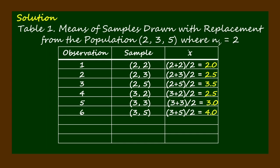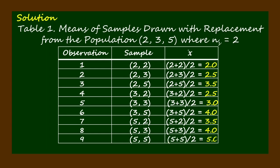For the sixth observation, the samples are 3 and 5, and the sample mean is 4.0. For the seventh observation, the samples are 5 and 2, and the sample mean is 3.5. For the eighth observation, the samples are 5 and 3, and the sample mean is 4.0. For the ninth observation, the samples are 5 and 5, and the sample mean is 5.0. A total of nine samples with nine sample means can be drawn from the population 2, 3, 5. The probability of occurrence of each mean is 1 over 9.